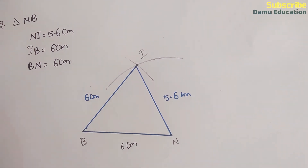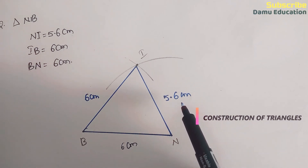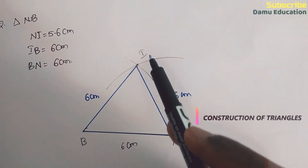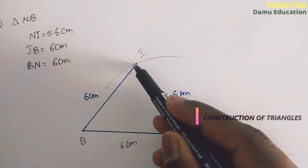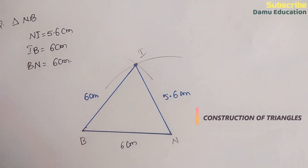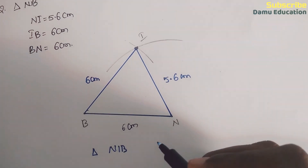What are the steps of construction? First, draw line segment BN with 6 centimeters. With N as a center, draw an arc with 5.6 centimeters, and with B as a center, draw an arc with 6 centimeters. Where the two arcs coincide, that is point I. Join IN and IB, and the constructed triangle NIB is complete.